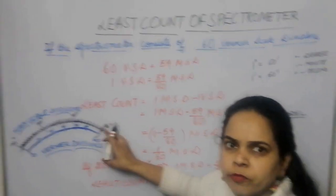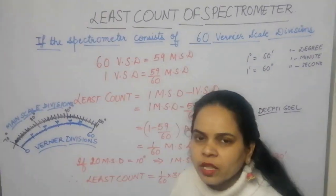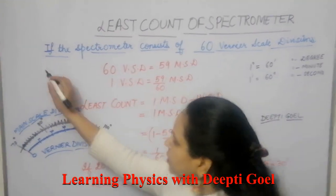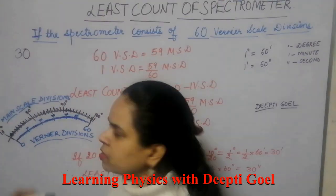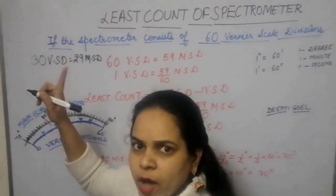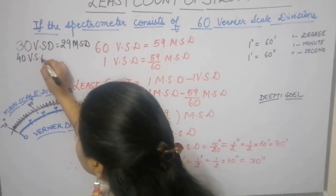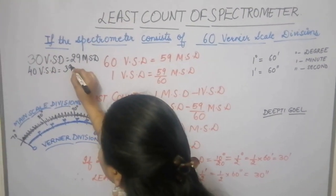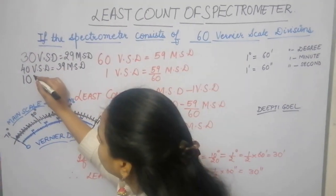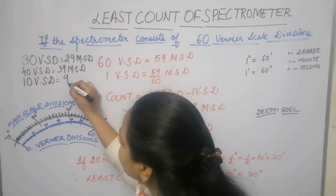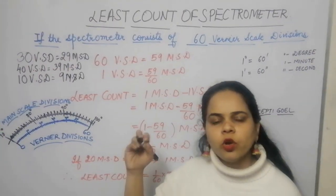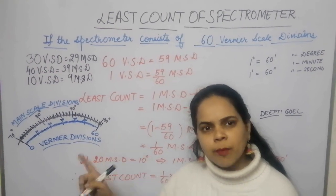Whenever you choose a spectrometer, always check how many vernier divisions there are. If there are 30 vernier scale divisions, they coincide with 29 main scale divisions. If there are 40 vernier scale divisions, they coincide with 39 main scale divisions. Similarly, the vernier caliper has 10 vernier scale divisions coinciding with 9 main scale divisions. Always remember: vernier divisions coincide with one less number of main scale divisions.